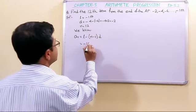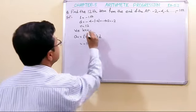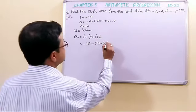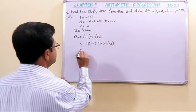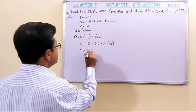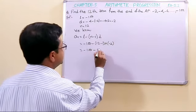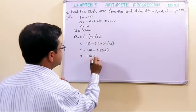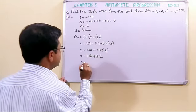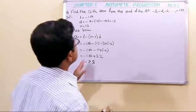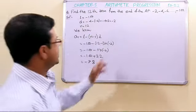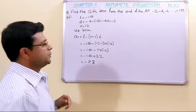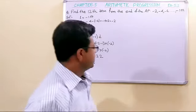Here l = -100, n = 12, and d = -4 - (-2) = -2. Substituting: -100 - (12-1)×(-2) = -100 - 11×(-2) = -100 + 22 = -78. So the 12th term from the end of this AP is -78.